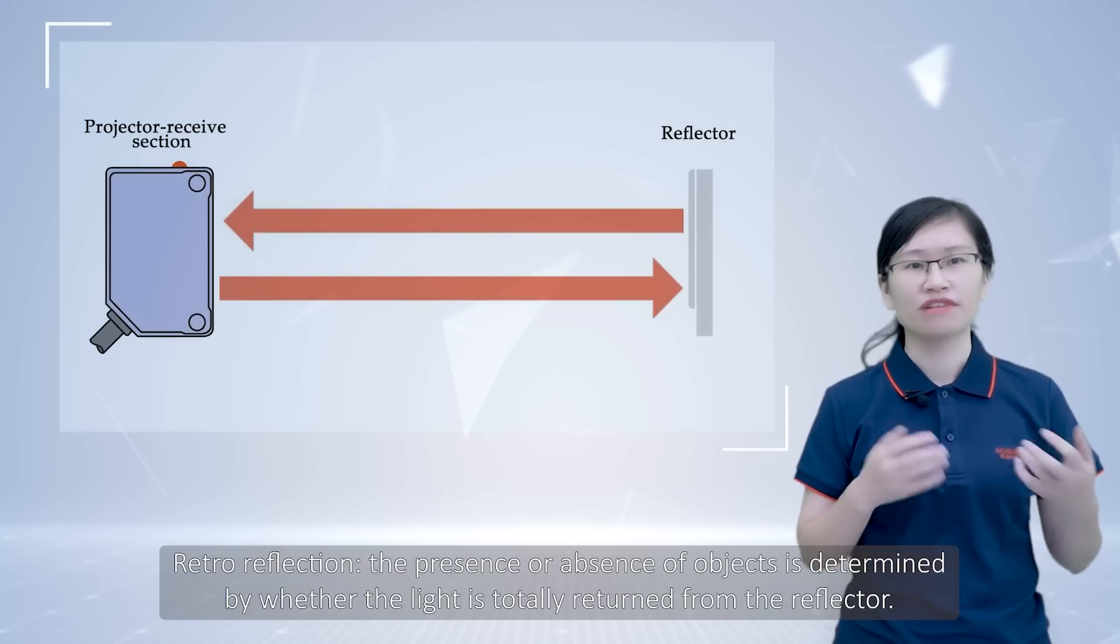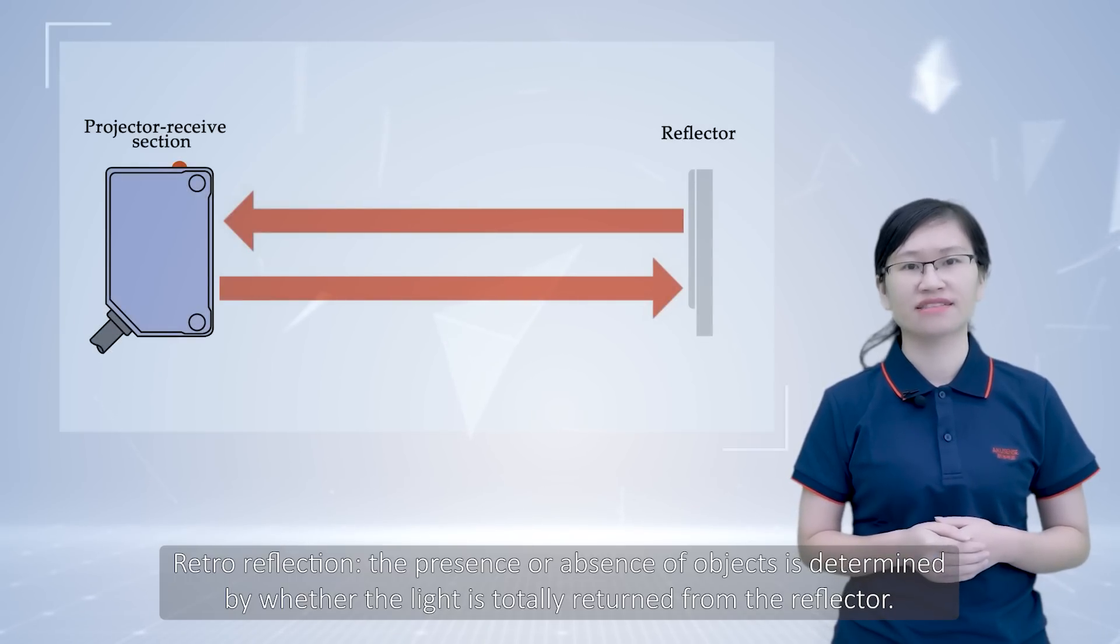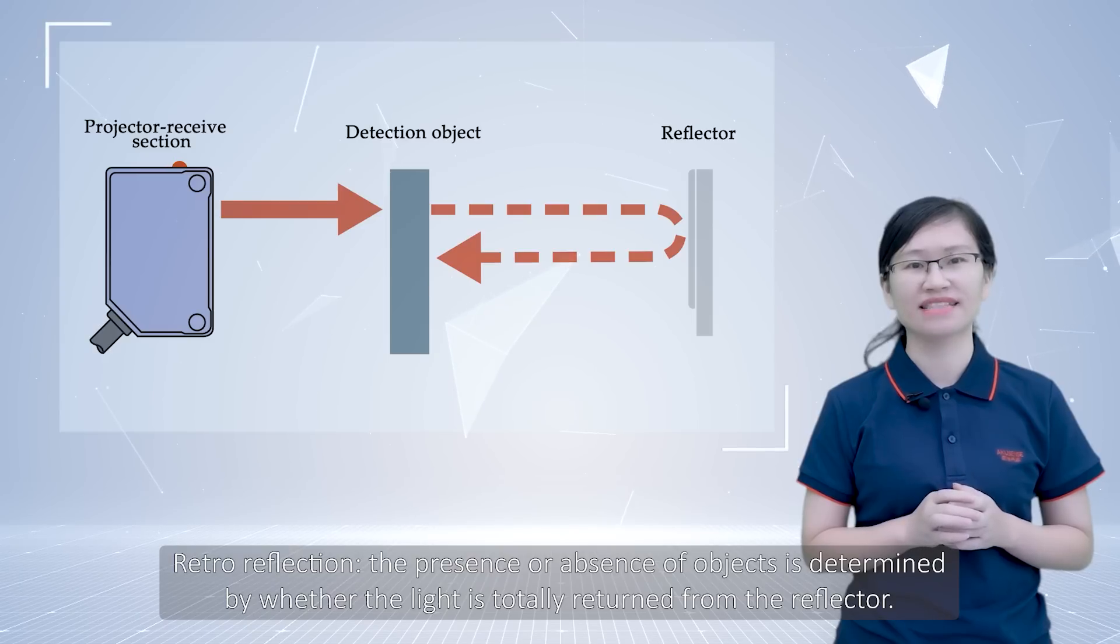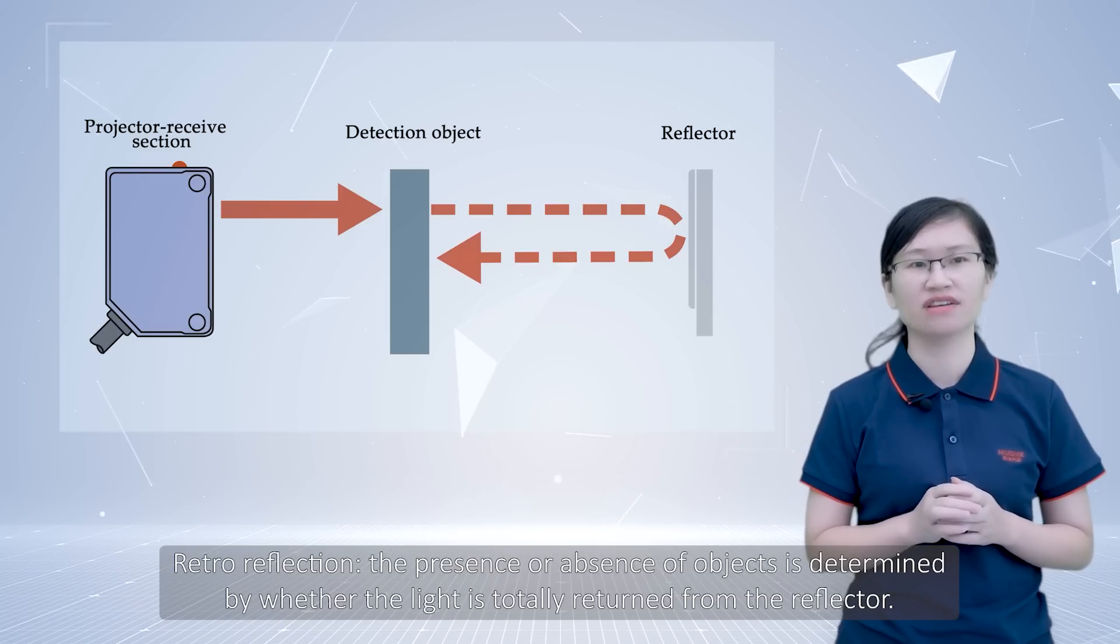For retro reflection, the presence or absence of objects is determined by whether the light is totally reflected from the reflector.